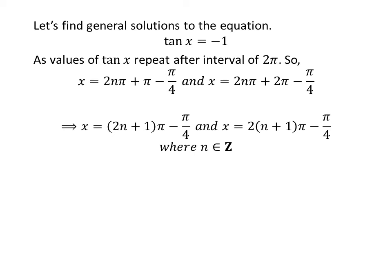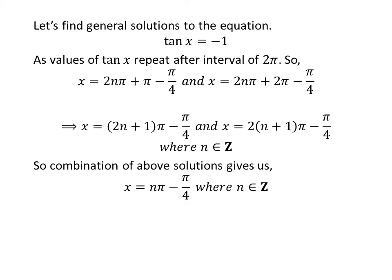Further simplification gives us general solutions of the form 2 times n plus 1 times pi minus pi upon 4. Since 2n is an even integer and 2n+1 is an odd integer for any n, the union of these two sets is the set of all integers. So the general solution to the equation is n times pi minus pi upon 4, where n is any integer.